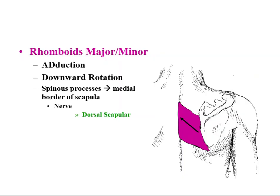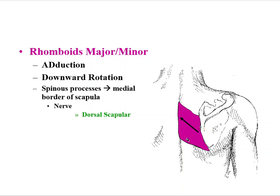Rhomboids major and minor — we're going to put those together. They come from the spinous processes to the medial border of the scapula. They create adduction or retraction of the scapula, moving the scapula toward the midline. And also due to their angulation angling somewhat upward, they will contribute to downward rotation of the scapula. Neural innervation is the dorsal scapular nerve, similar to the levator scapula.